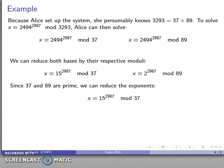Next, since I know that 37 and 89 are both prime, those exponents can be reduced. So this 2987, what I'm going to do is I'm going to split off factors of 37 minus 1, 36. So that 2987, 36 times 82 plus 35. Rearrange, 15 to the power 36 to the 82nd, 15 to the 35th, 37 is prime, so anything to the 1 less is going to be 1. So this first factor here is 1. I can ignore it, and I have x congruent to 15 to the power 35.